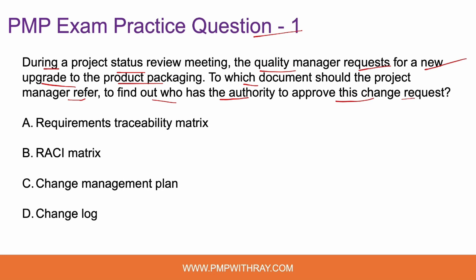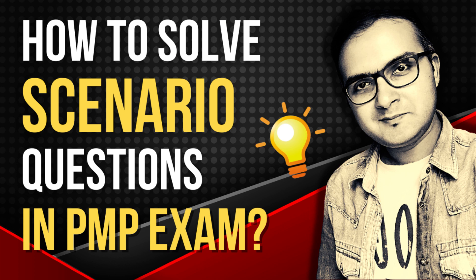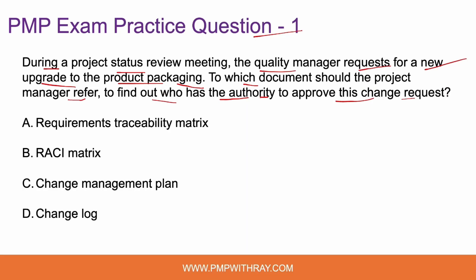So the quality manager has put forward a new upgrade request to the product packaging, and the project manager needs to find out who has the authority to approve this change request. Let's look at options A, B, C, and D and evaluate them one by one. While doing that, we'll keep the positive bias principle in mind — we will not reject any option without solid reasoning. We'll always keep all options on the table until we have a solid reason to reject one.